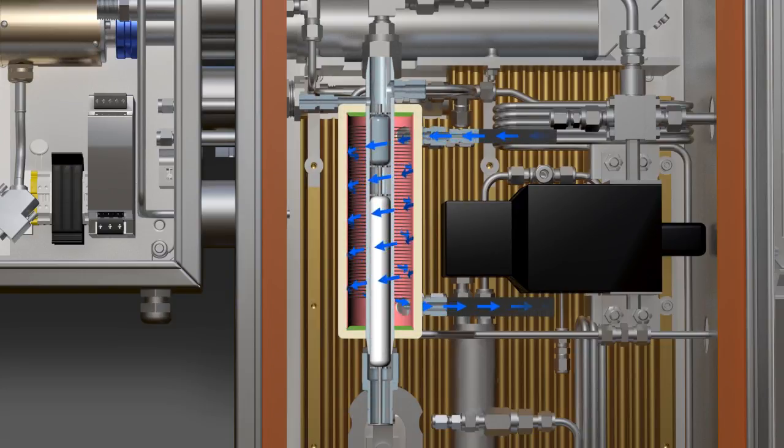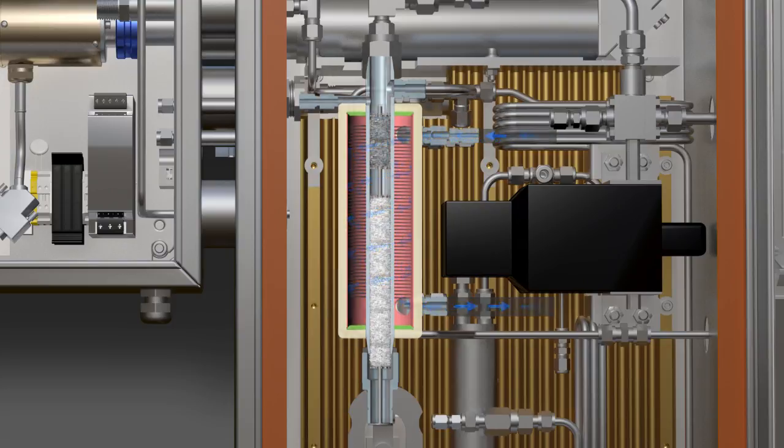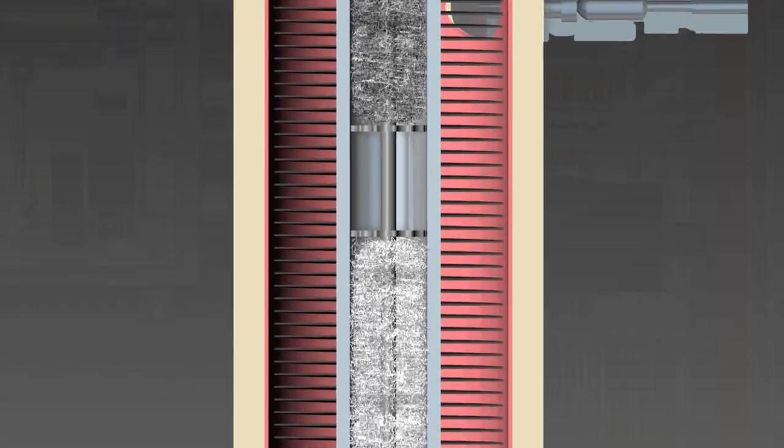As the tail gas enters the analyzer, the newly designed internal demister removes entrained elemental sulfur mist from the gas stream using dual teflon and stainless steel demister pads.